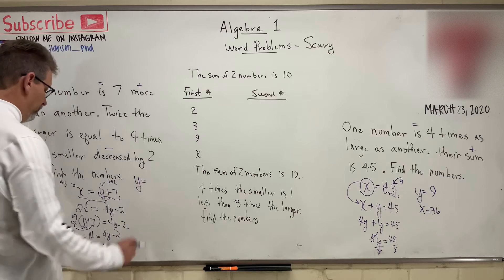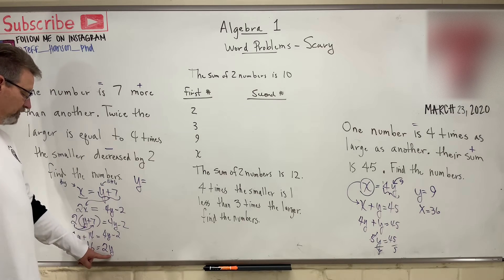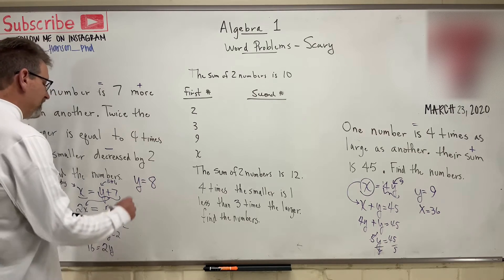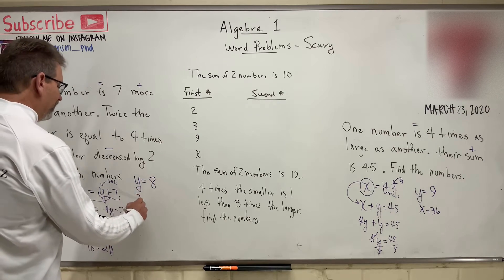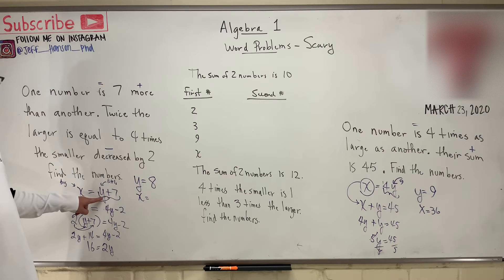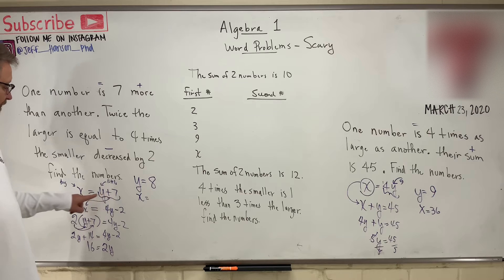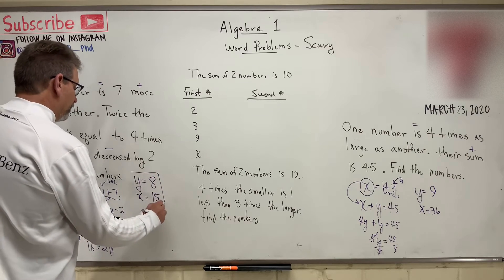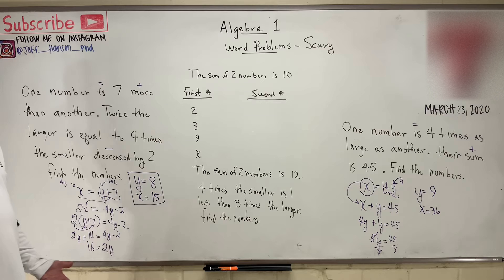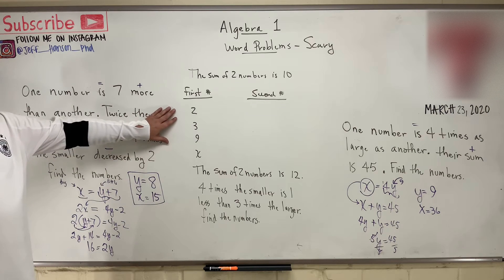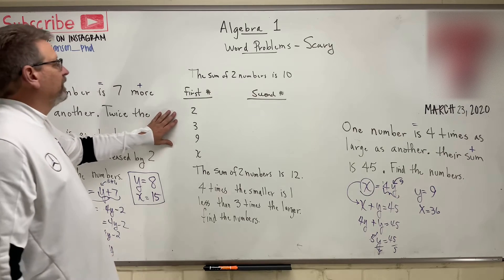Divide both sides by two and we get Y is equal to eight. Then what is X equal to? Go back, put your eight right there, and we get eight plus seven equals X. So eight plus seven is fifteen. We got this. It's hard. This is hard. I agree. This is tricky stuff here.